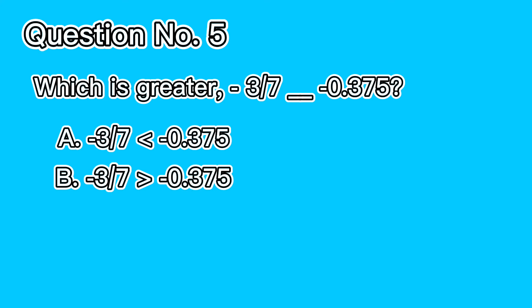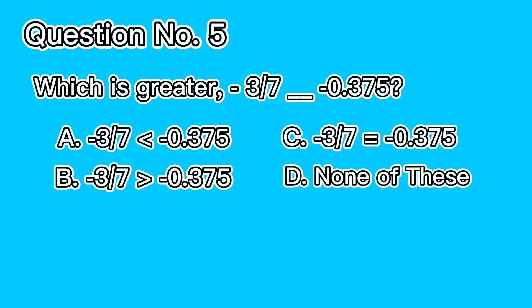B. Negative 3 over 7 is greater than negative 0.375. C. Negative 3 over 7 is equal to negative 0.375. D. None of these.